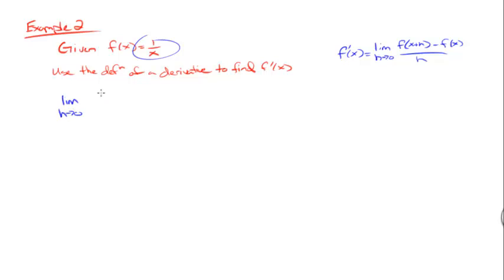So f of x plus h for that function is 1 over x plus h minus f of x, which is just 1 over x, all over h.